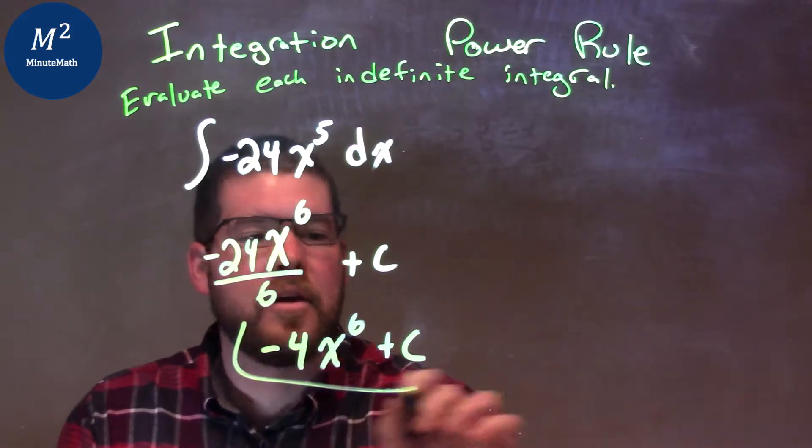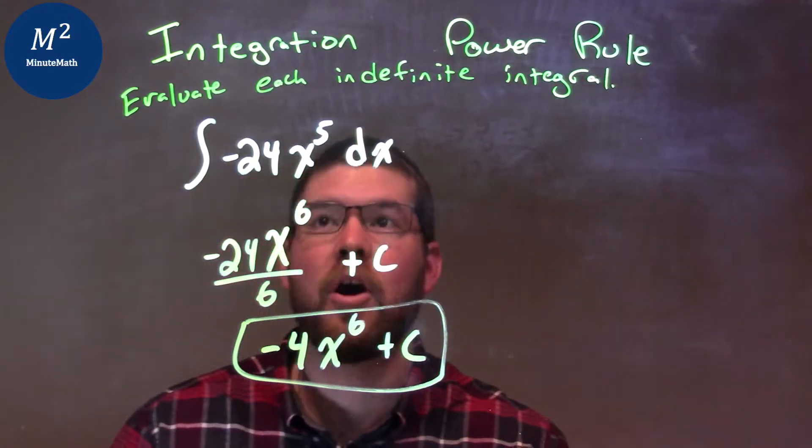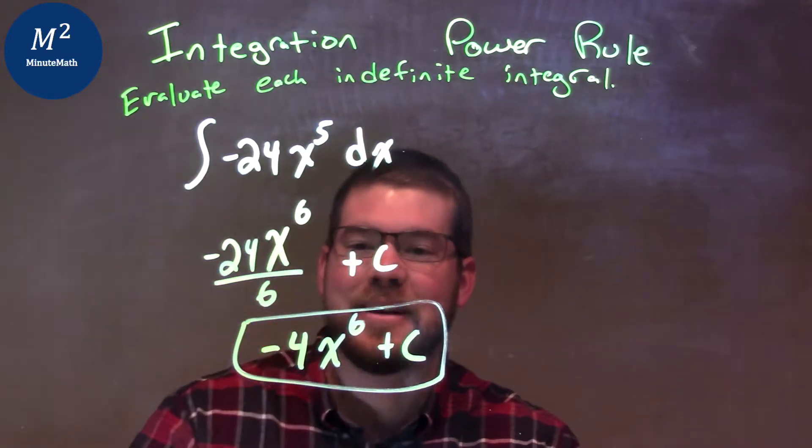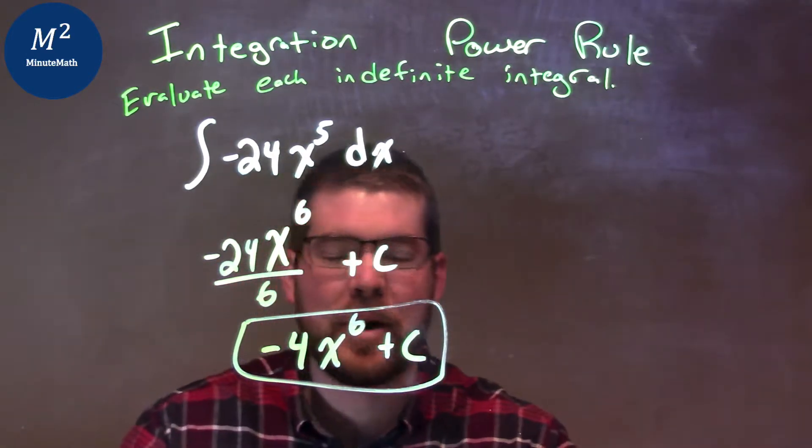And there we have it. Our final answer, our integral. We find the indefinite integral right here. So, negative 4x to the 6th power plus c.